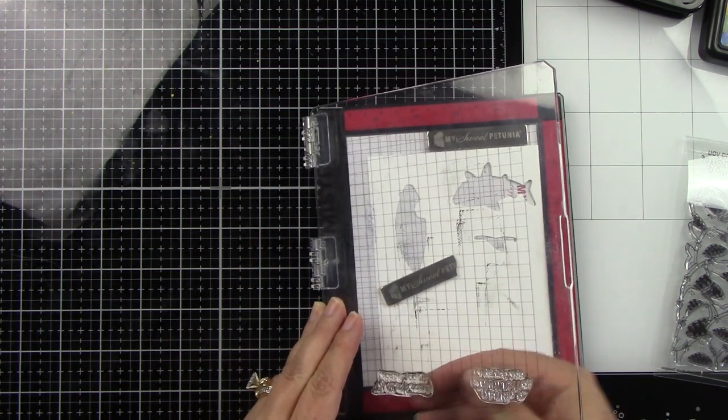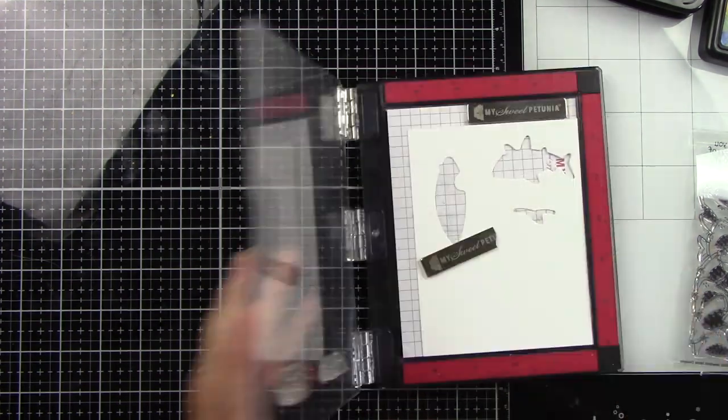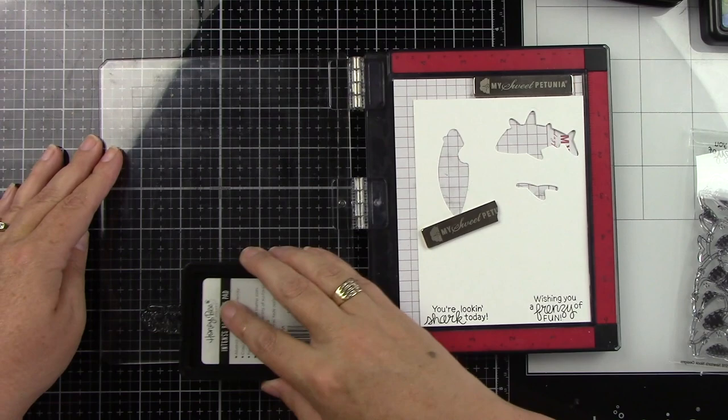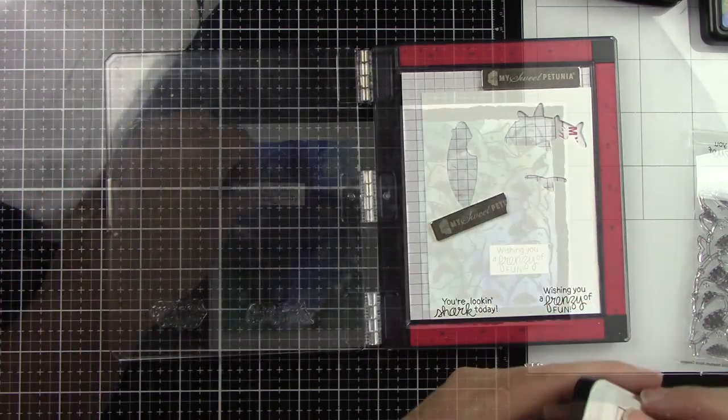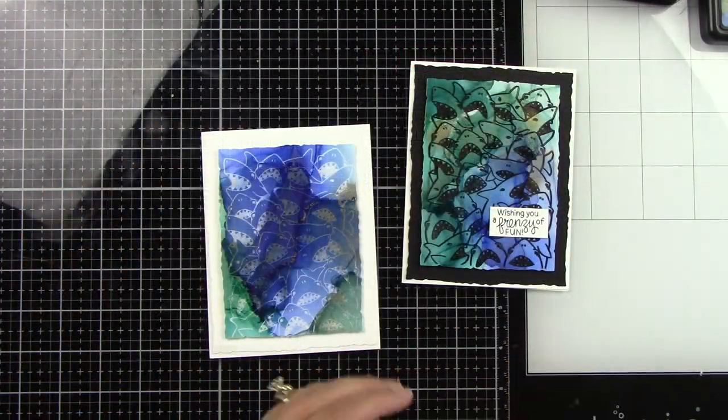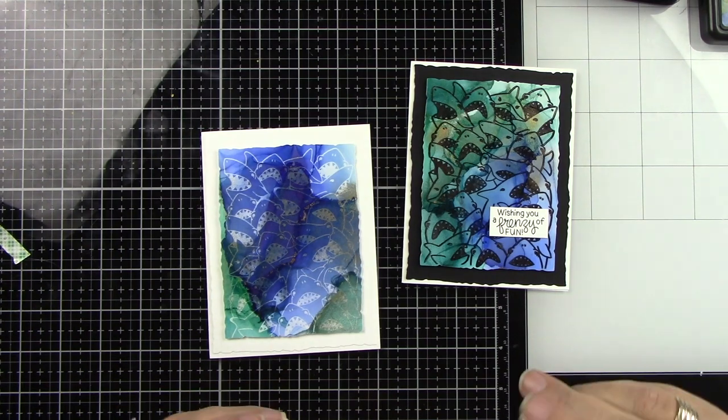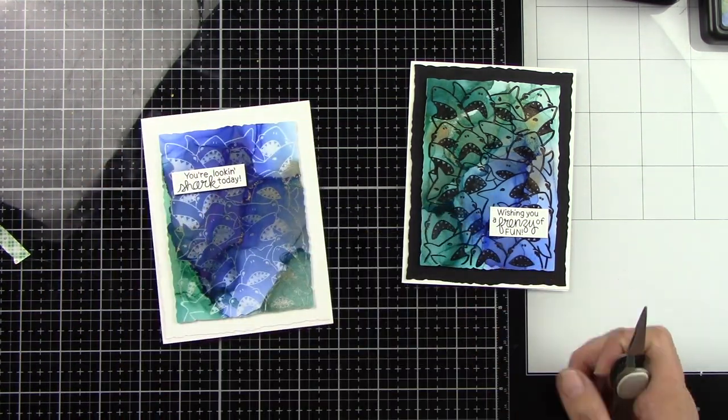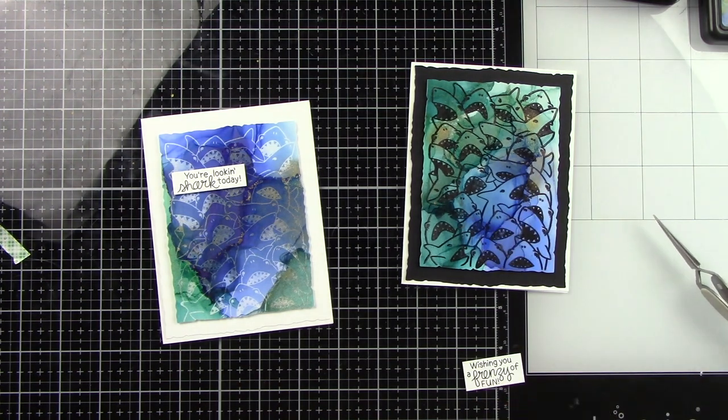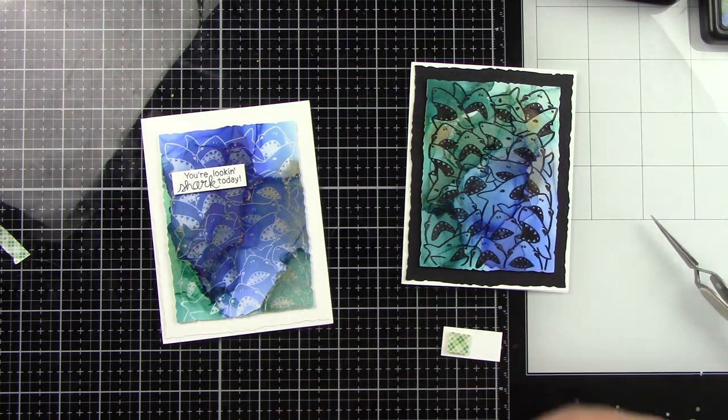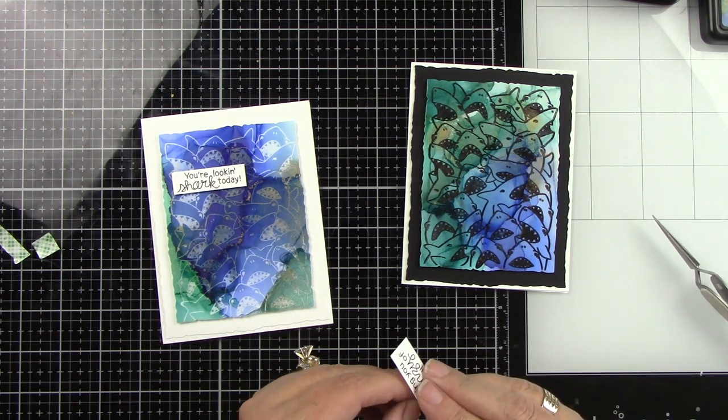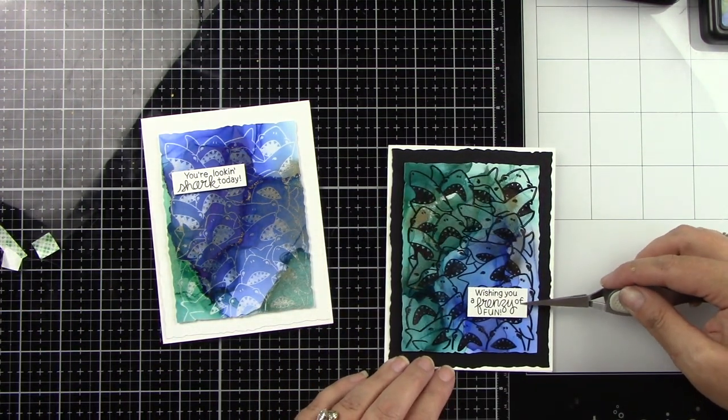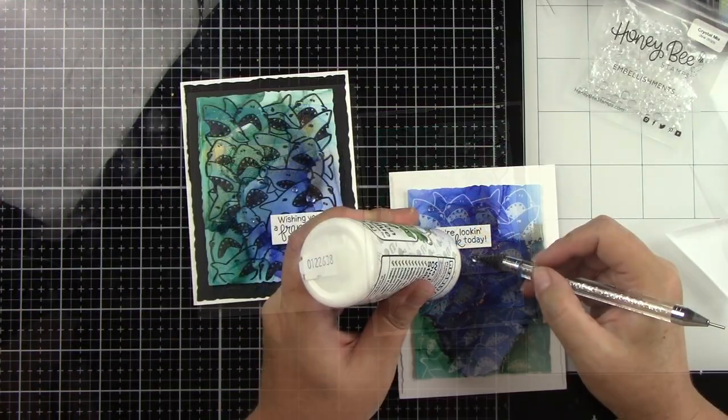You don't want to miss out on a chance for that. So I have my mini MISTI and I'm going to stamp those sentiments with some black ink. And I'm just going to use my paper trimmer to trim these out. But they're so super cute. They say, wishing you a frenzy of fun and you're looking shark today. Isn't that so cute? I just think those are super fun sentiments. Those were the only two sentiments on this stamp set. Last year I did use the Shark Bites for Newton's Nook on last year's Shark Week card event video.